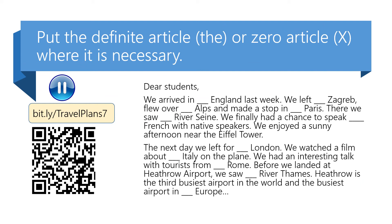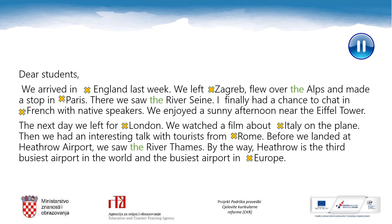Here is a task for you. This is an email that a group of English language teachers sent to their students. Read the email and decide whether to use the definite article or not — put the definite article 'the' or no article (x) where necessary. Pause the video now, copy the link or scan the QR code and complete the email. You can pause the video and check your use of the definite article.